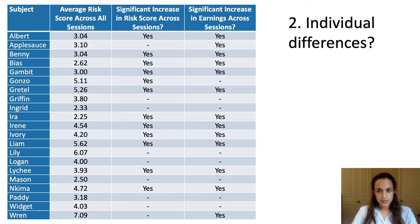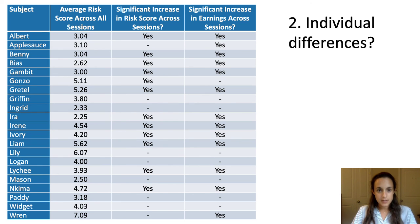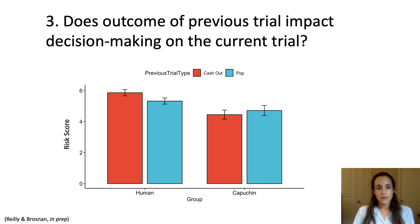We do see individual differences in capuchins. Even though there is a huge range in average risk score across all sessions, two general patterns emerge: individuals either showed a significant increase in risk score and earnings across sessions, or they showed no evidence of learning across sessions.